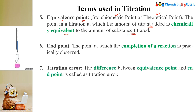The next term is titration error. Titration error is the difference between the equivalence point and the end point. So simplified, titration error is nothing but the difference between the equivalence point and the end point.